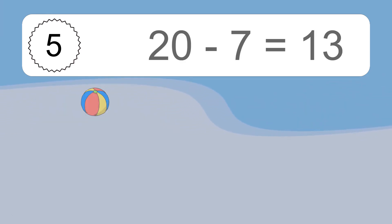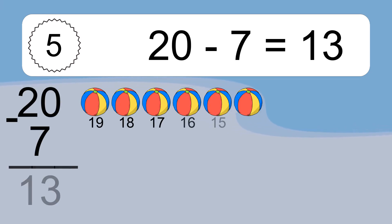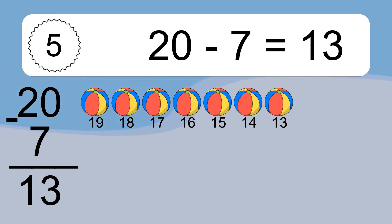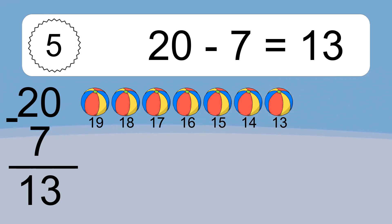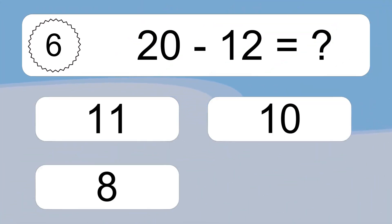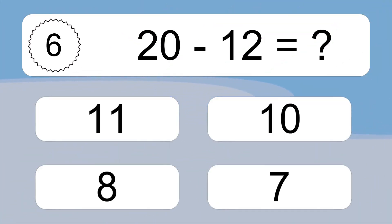20 minus 7 equals what? 20 minus 7 equals 13. Let's count it: 19, 18, 17, 16, 15, 14, 13.